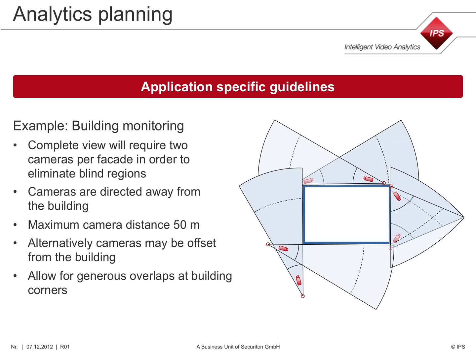In a further example we see how to plan building monitoring. To eliminate blind regions, two cameras per façade are required. Cameras are directed away from the building. Alternatively, cameras may be offset from the building, mounted on masts.